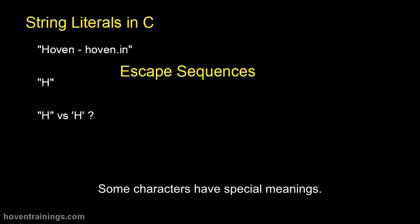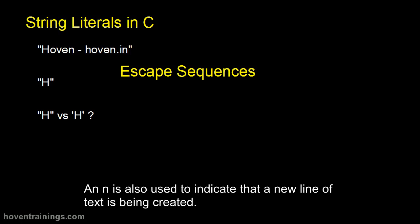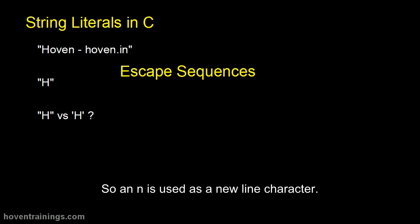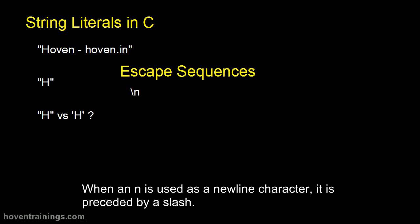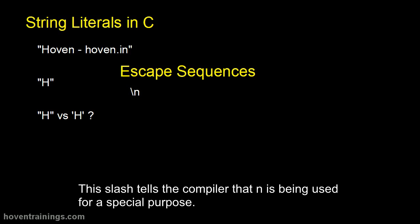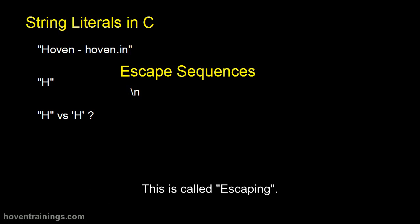Some characters have special meanings. One such character is the N character. An N is also used to indicate that a new line of text is being created. So an N is used as a new line character. When an N is used as a new line character, it is preceded by a slash. This slash tells the compiler that N is being used for a special purpose. This is called escaping.